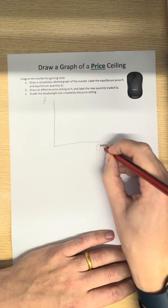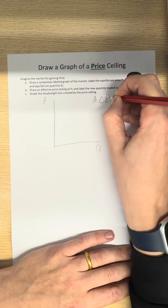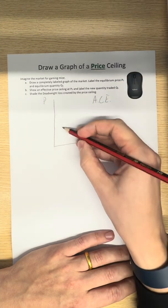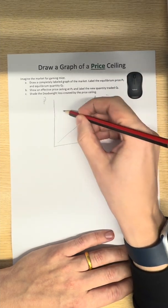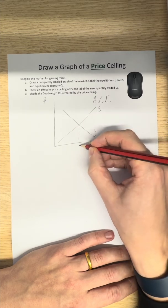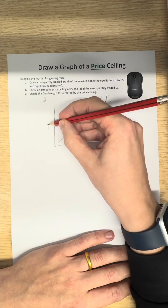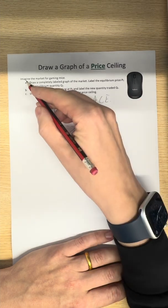We watched the other Econ Short about labeling all the components of ACE. Axis labels, curve labels, supply, demand. We've got our equilibrium labels. Okay, great. The equilibrium quantity of gaming mice is Q1, equilibrium price P1.